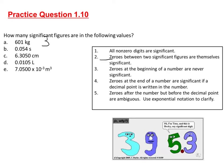The next one, B, is 0.054 seconds. Zeros at the beginning of a number are never significant, so those first two zeros don't count. We only have two significant figures for that one.